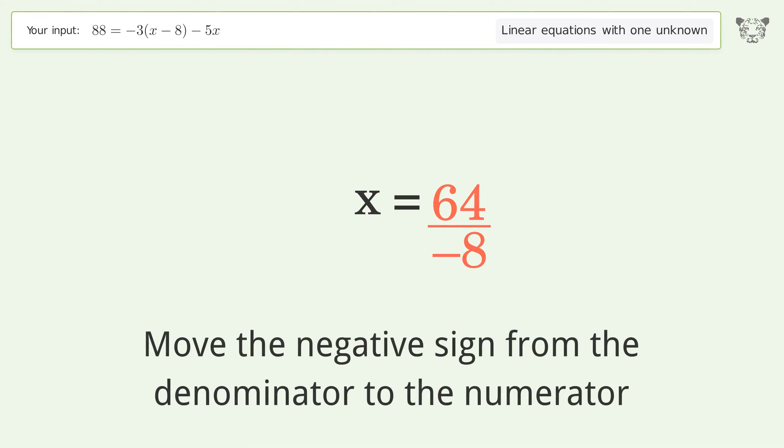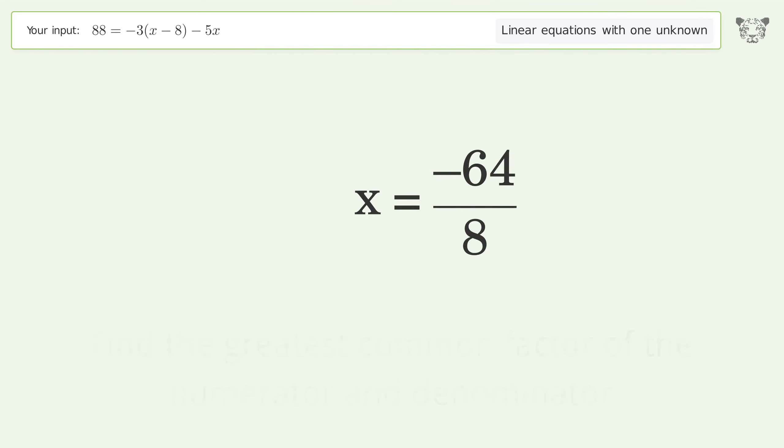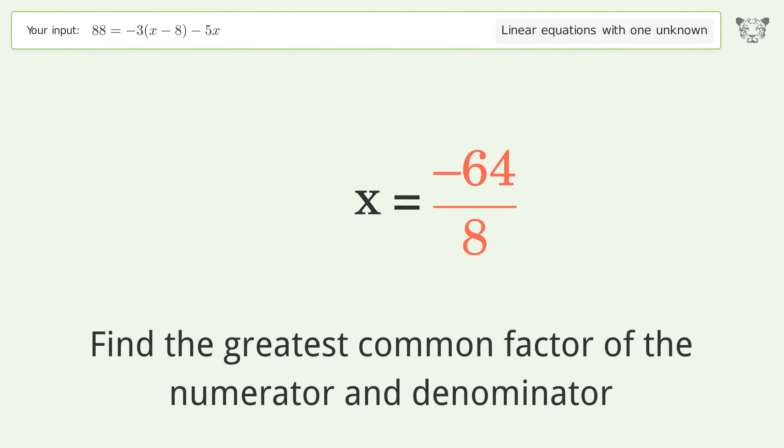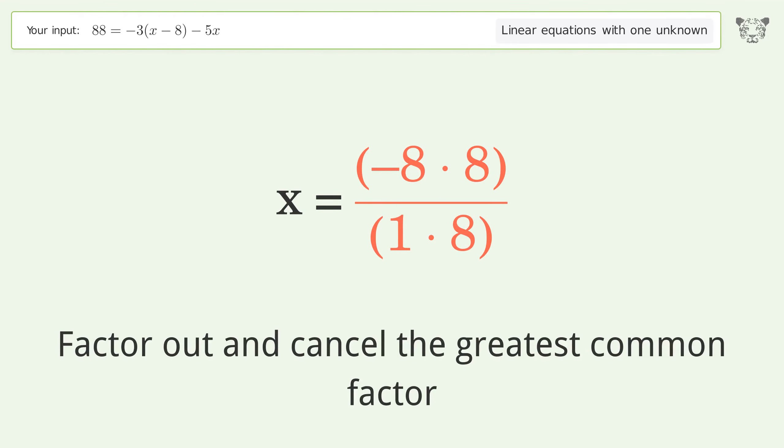Move the negative sign from the denominator to the numerator. Find the greatest common factor of the numerator and denominator. Factor out and cancel the greatest common factor.